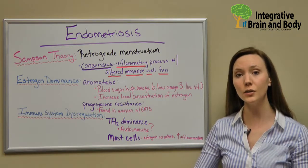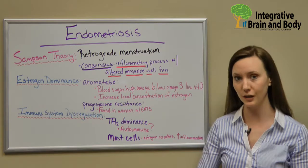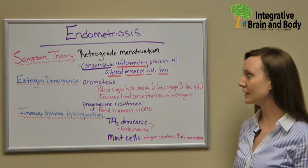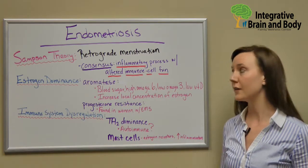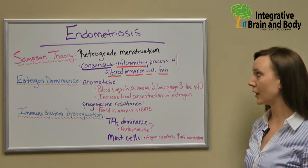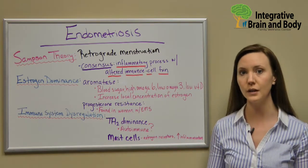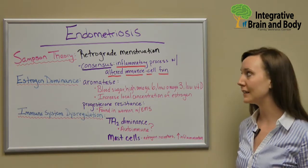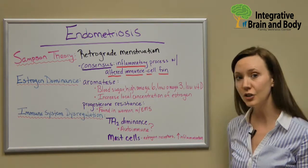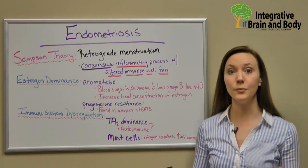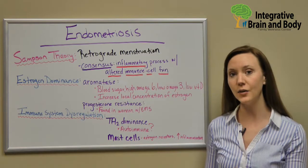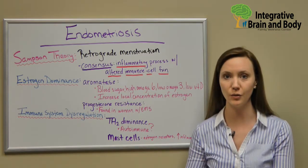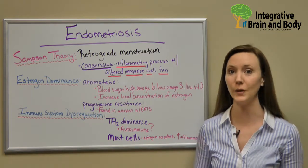So we know there's a lot more going on than just retrograde menstruation. The consensus is that there is also an inflammatory process with altered immune cell function — we're looking at inflammation and immune cells. There is now recognized immune system dysfunction associated with endometriosis.